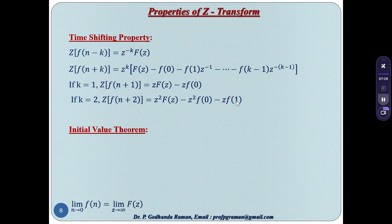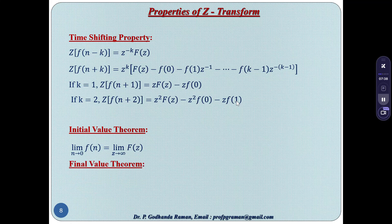Initial value theorem: lim(n→0) f(n) = lim(z→∞) F(z), where F(z) = Z{f(n)}. Final value theorem: lim(n→∞) f(n) = lim(z→1) (z−1)·F(z).